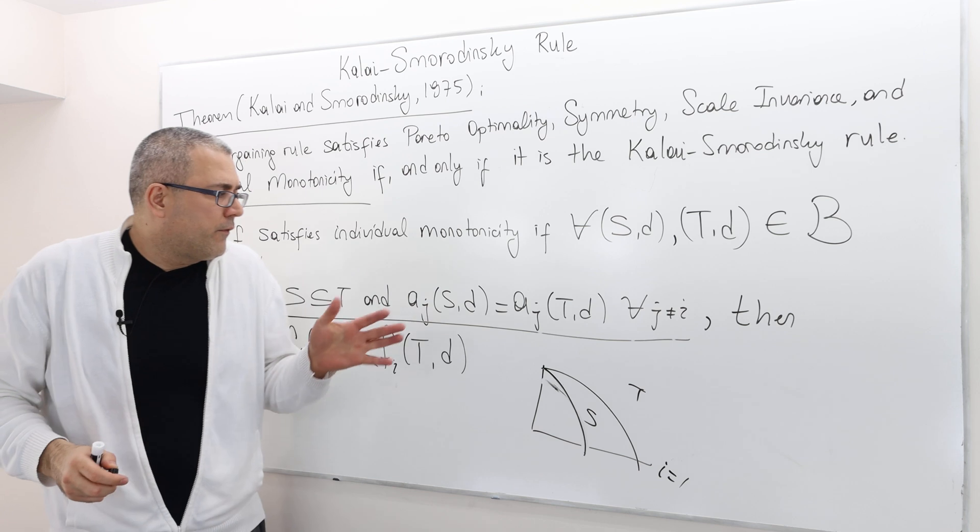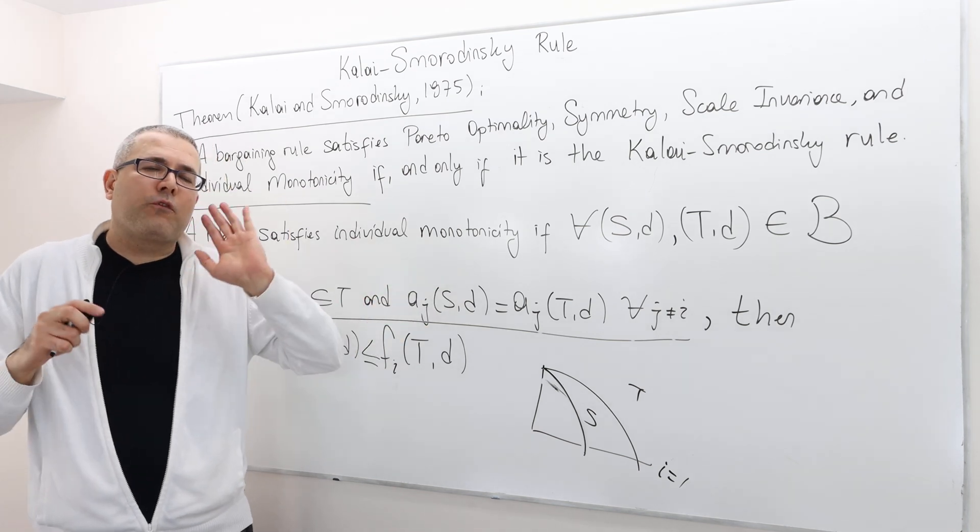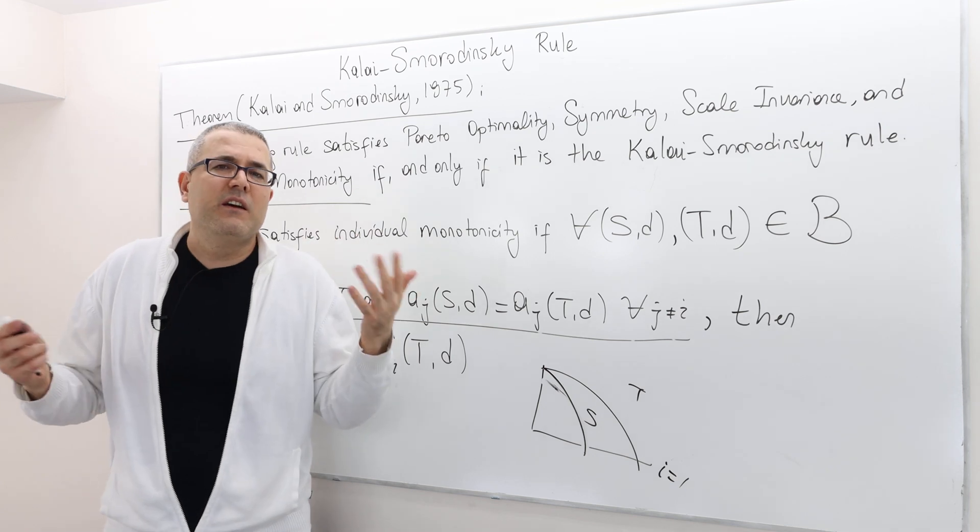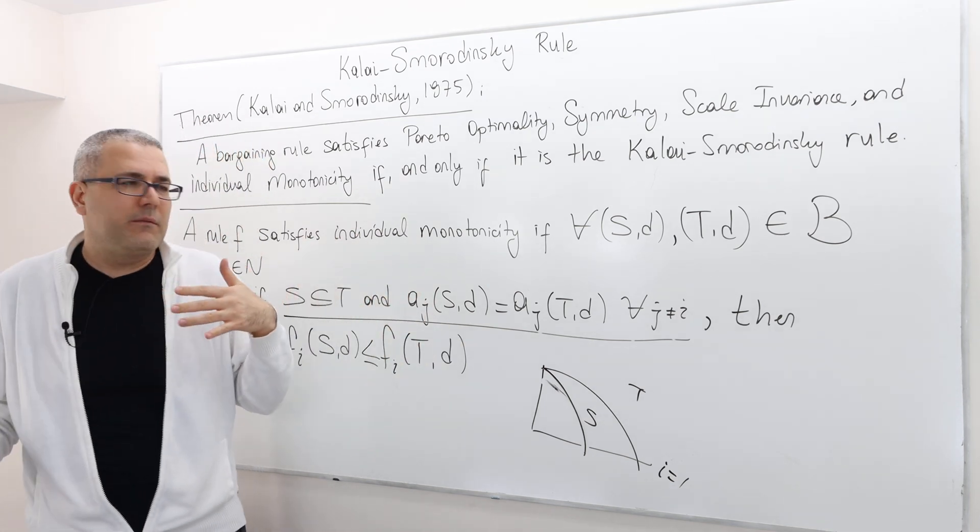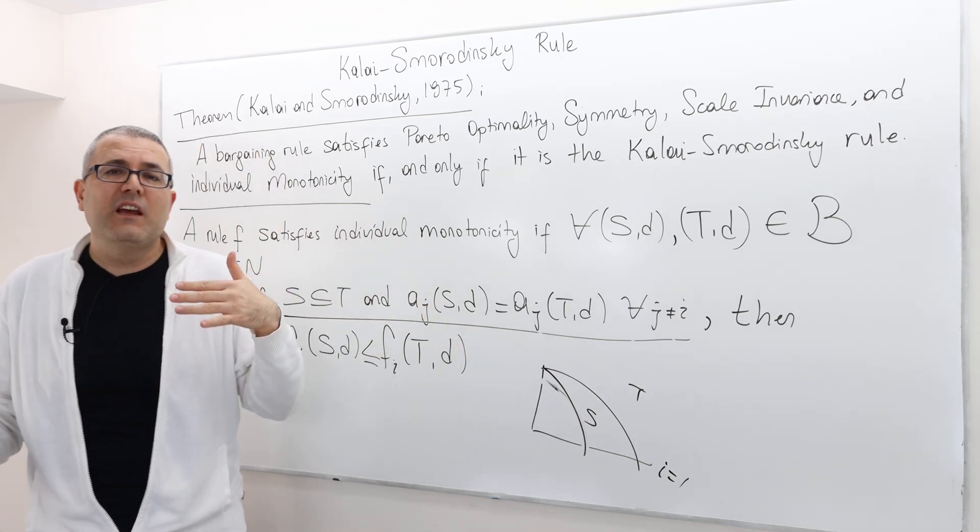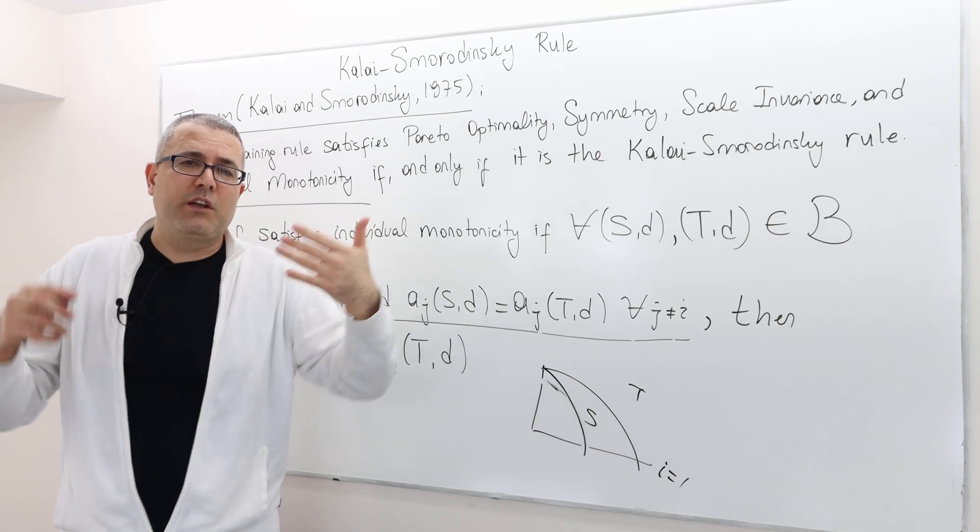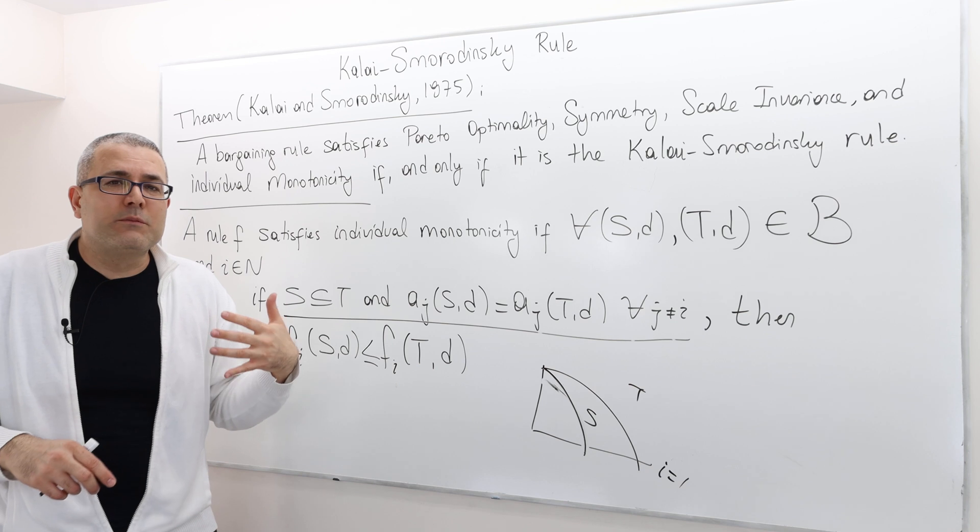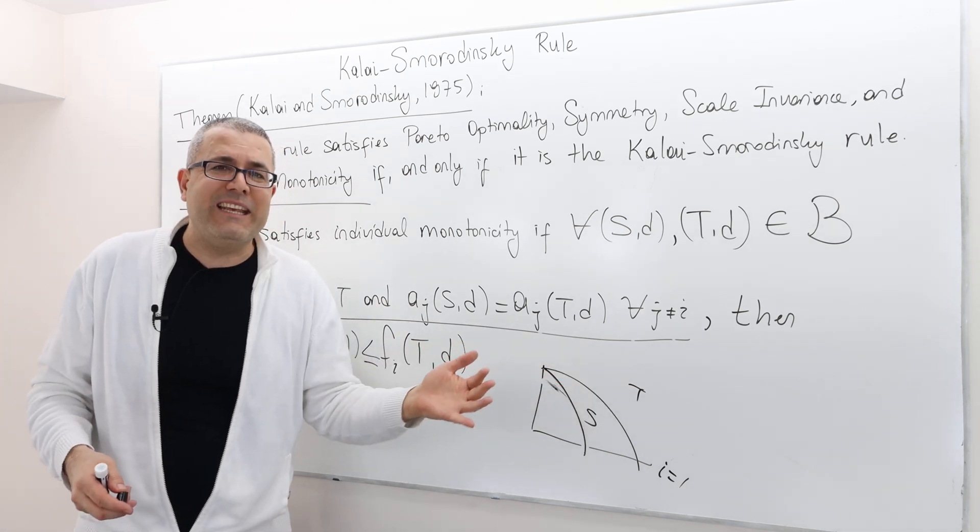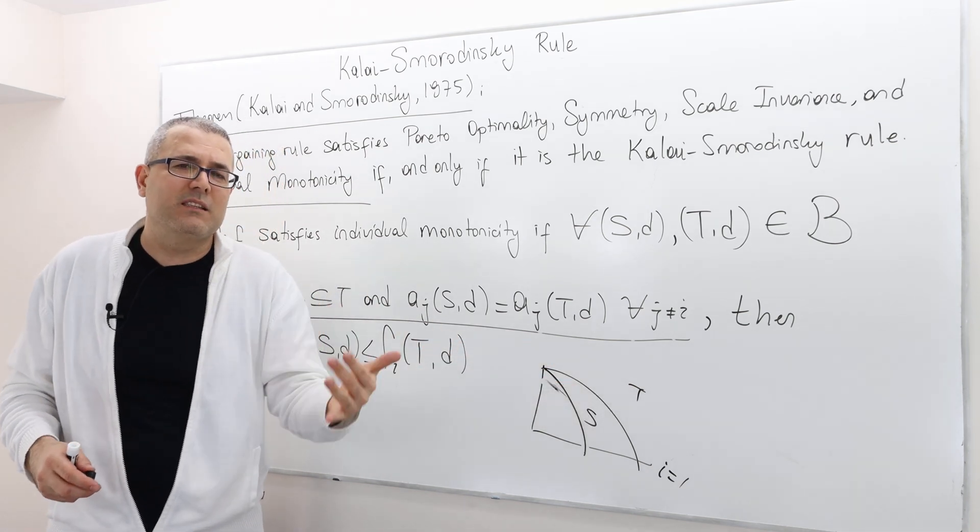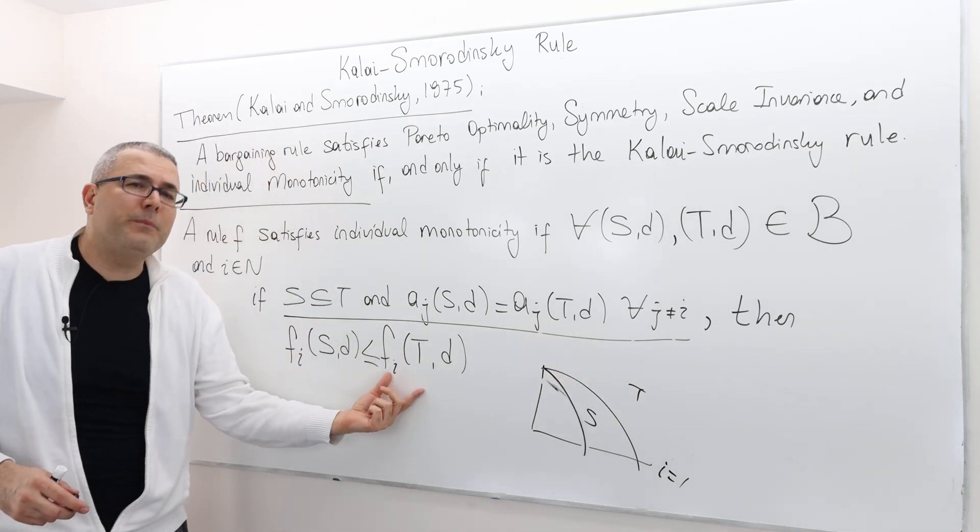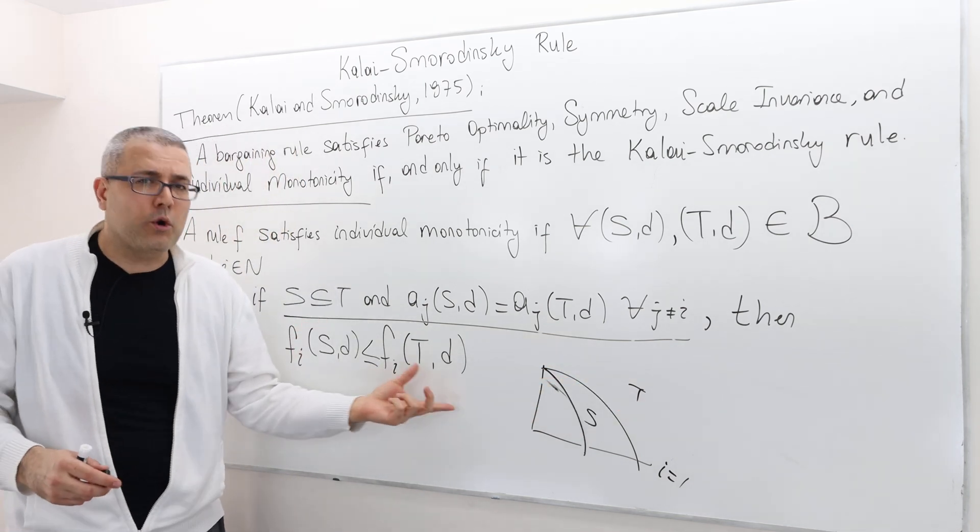I mean, for all the players other than player I, they don't care about bargaining problem T and S when it comes to their aspiration points. All right? However, player I gets more excited about game T, because his aspiration point is bigger in that problem. So therefore, he should be getting something more.